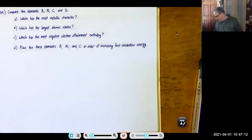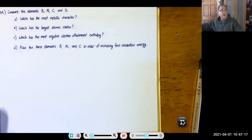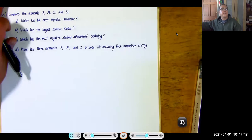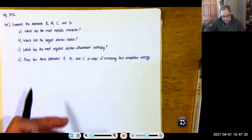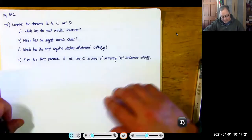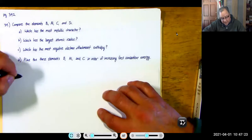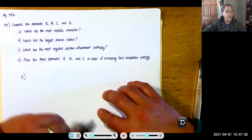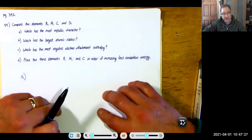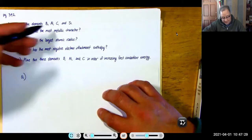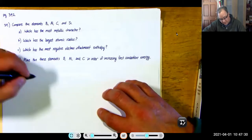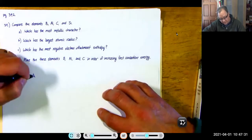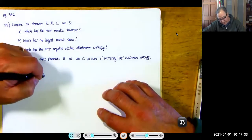Compare boron, aluminum, carbon, and silicon: part A, which has the most metallic character? Boron and silicon are both metalloids (metal-like), carbon is a nonmetal, so the answer is aluminum — it is a metal.